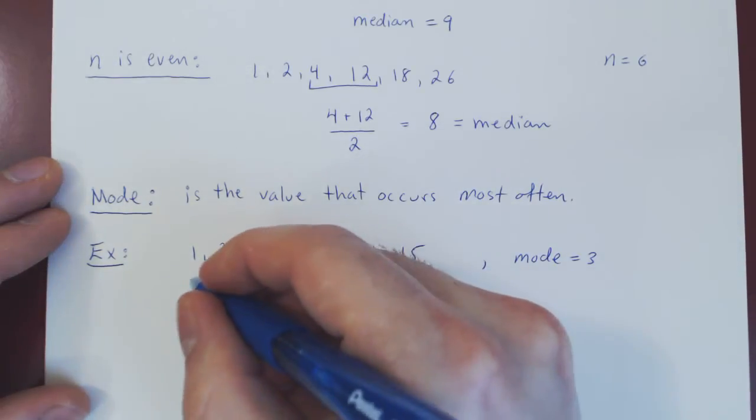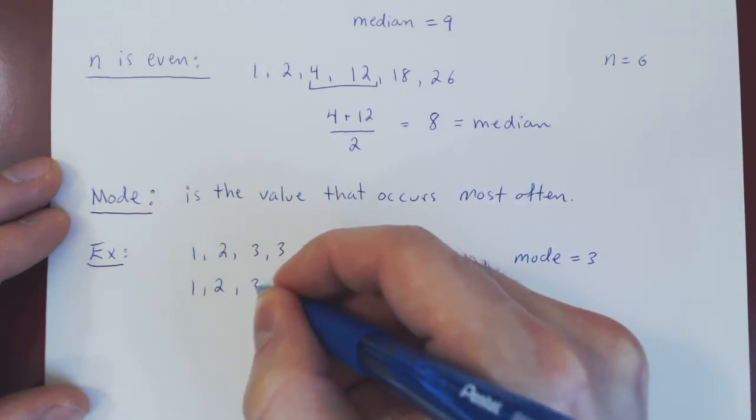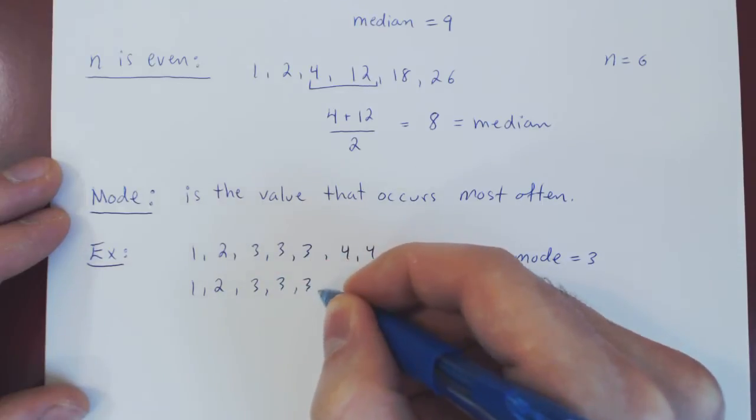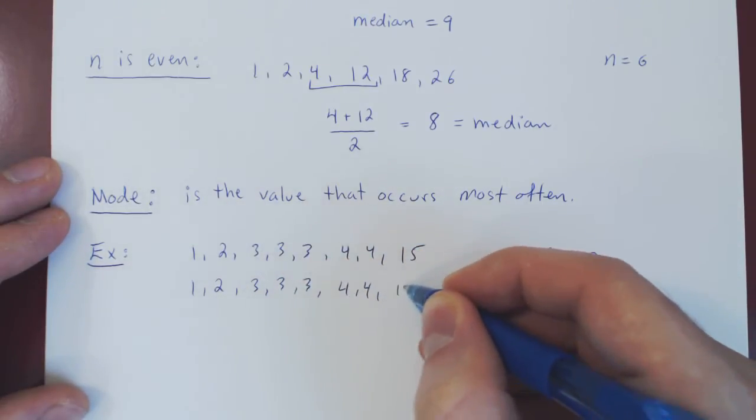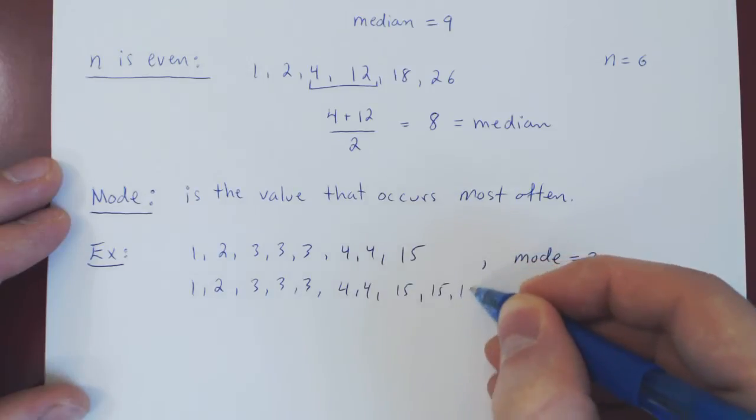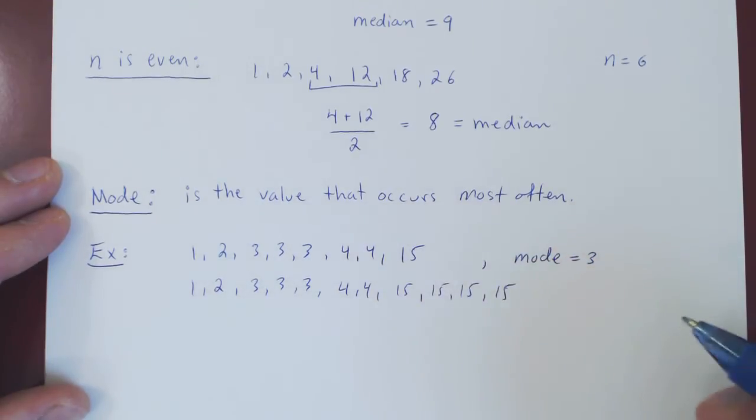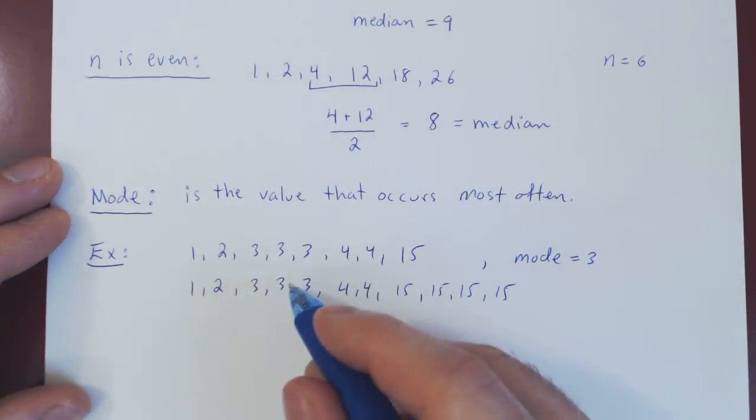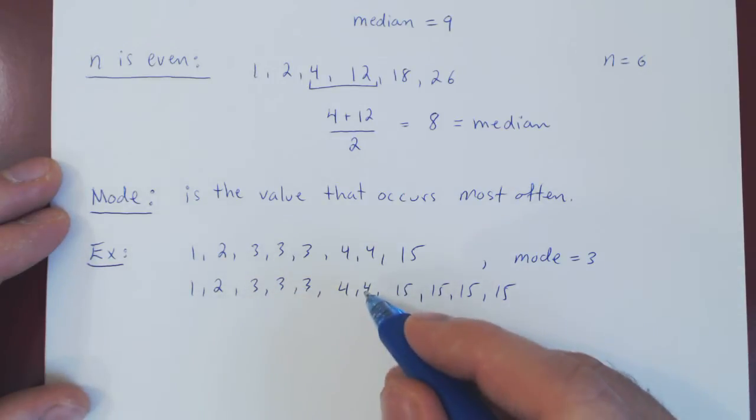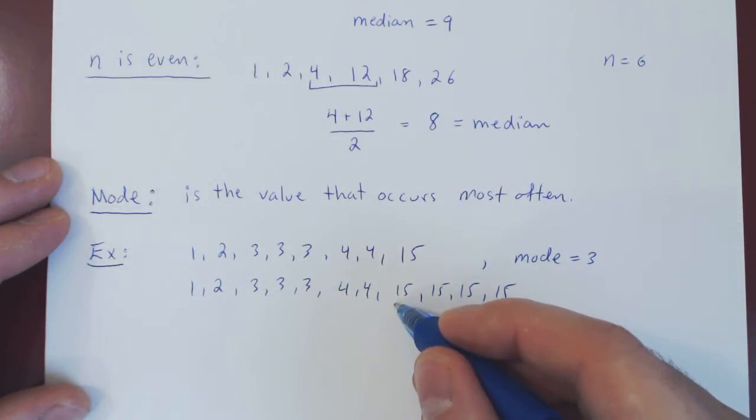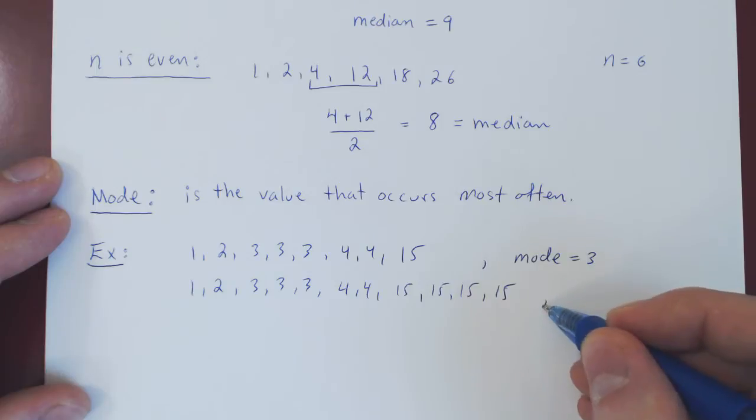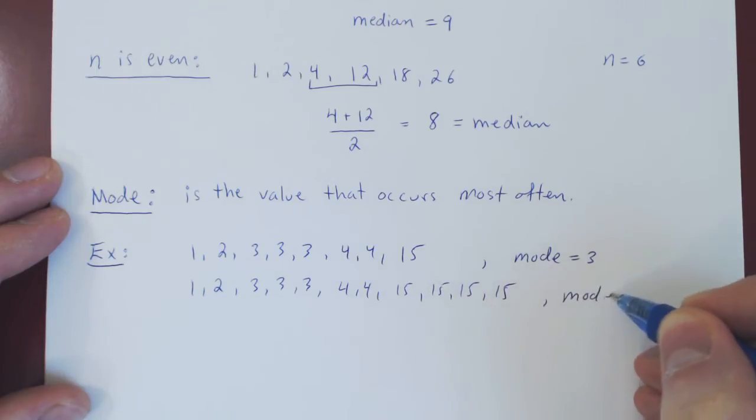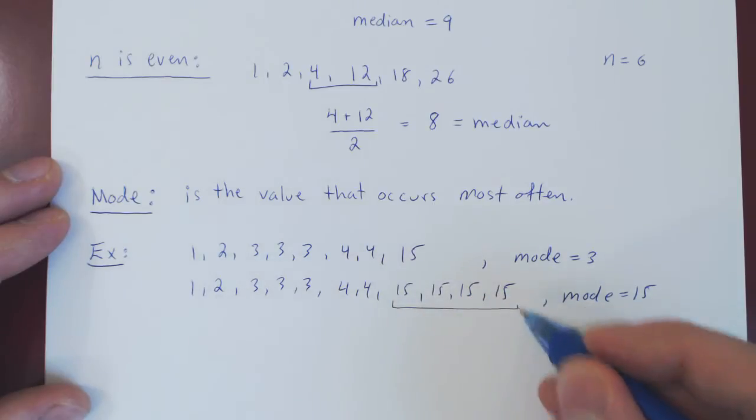You could have 1, 2, 3, 3, 3, 4, 4, 15, 15, 15, 15. Now, 3 occurs three times, 4 occurs two times, but 15 occurs four times. So here the mode equals 15, as 15 occurs the most often.